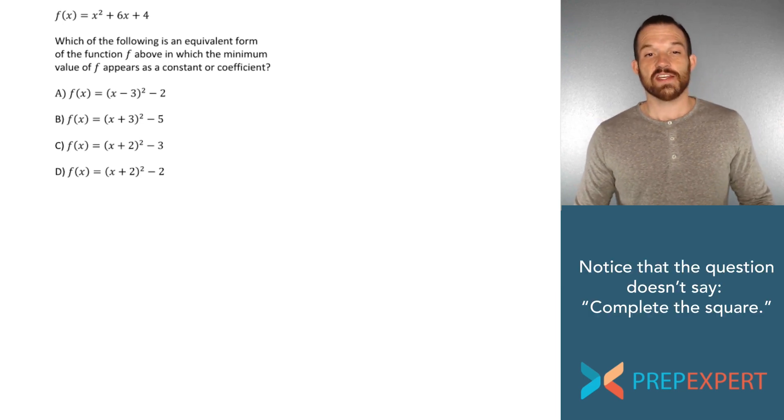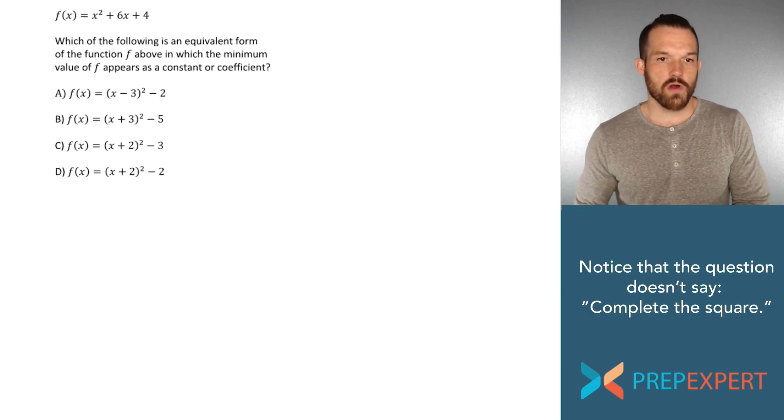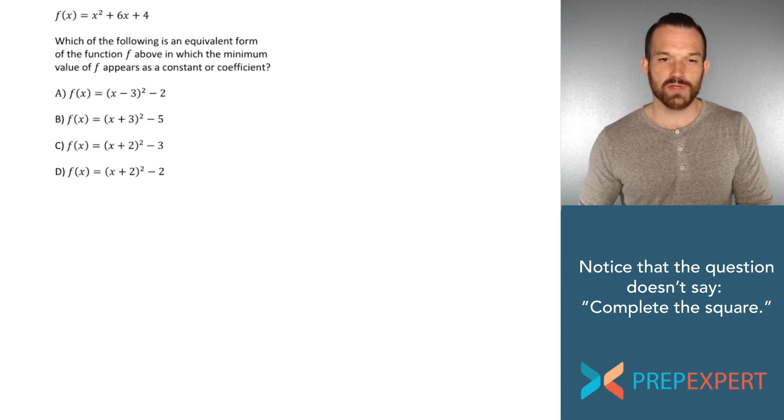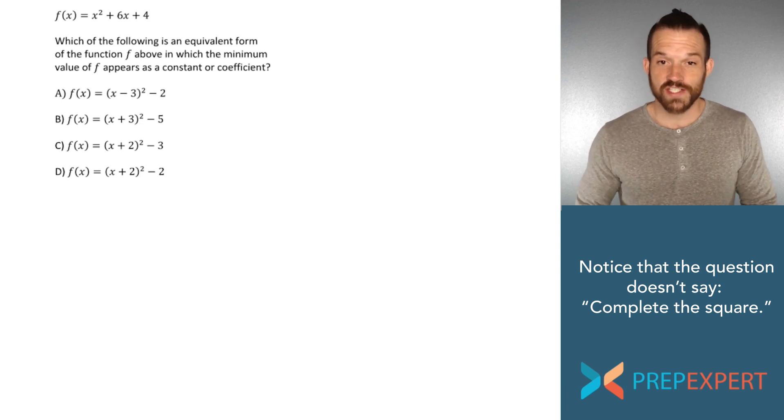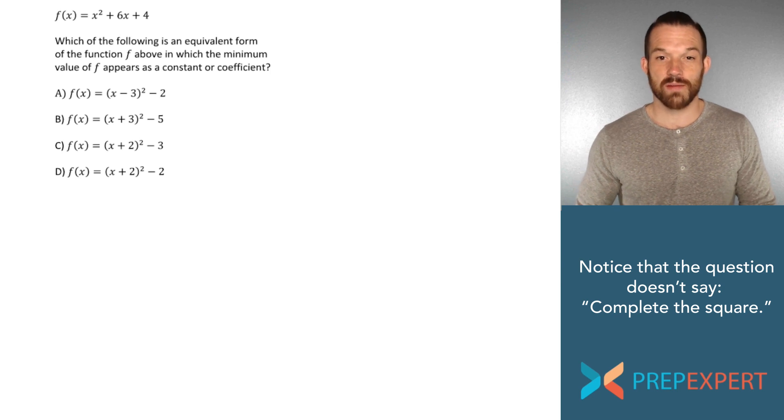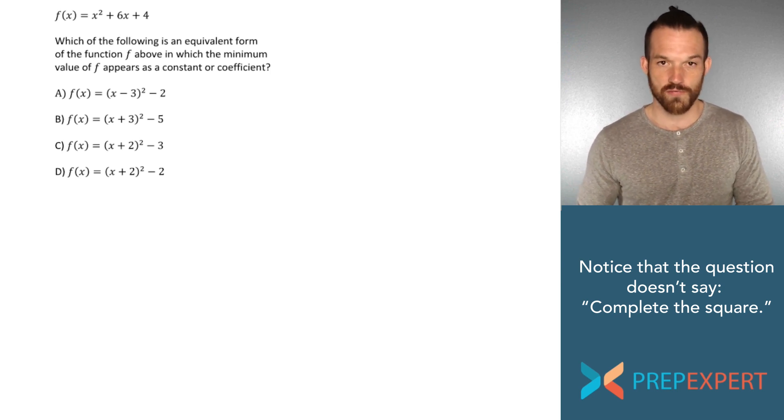Let's take a look at it. f(x) equals x squared plus 6x plus 4. Which of the following is an equivalent form of the function f above, in which the minimum value of f appears as a constant or coefficient. So first, what does this even mean?